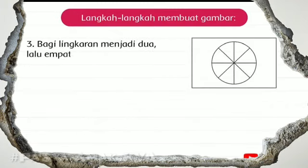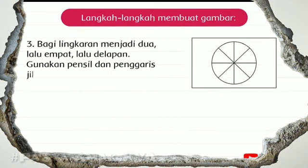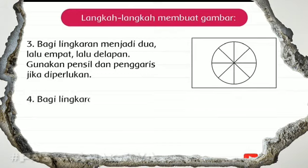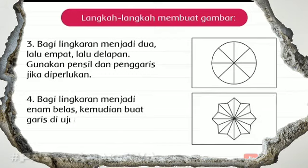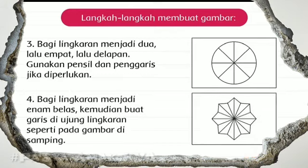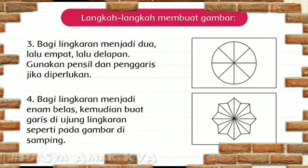Yang ketiga, bagi lingkaran menjadi dua, lalu empat, lalu delapan. Kalian gunakan pensil dan penggaris jika diperlukan ya. Yang keempat, bagi lingkaran menjadi enam belas dengan cara menarik garis. Kemudian buat garis di ujung lingkaran seperti pada gambar, sehingga ujung-ujung lingkaran tersebut berbentuk seperti segitiga.